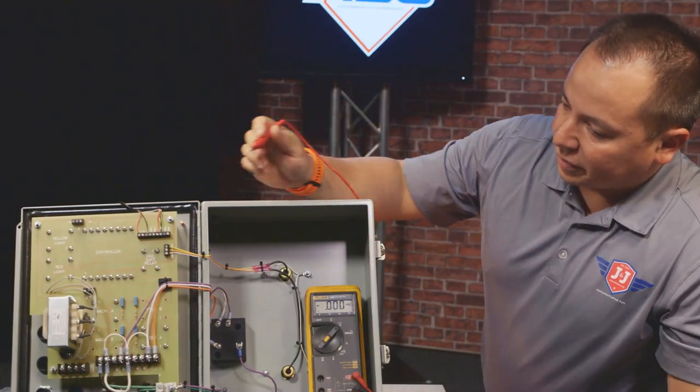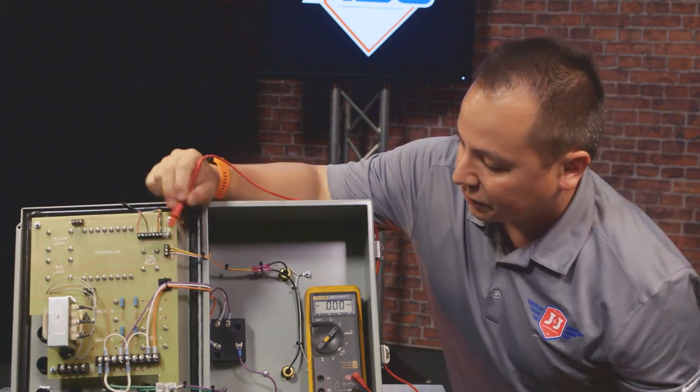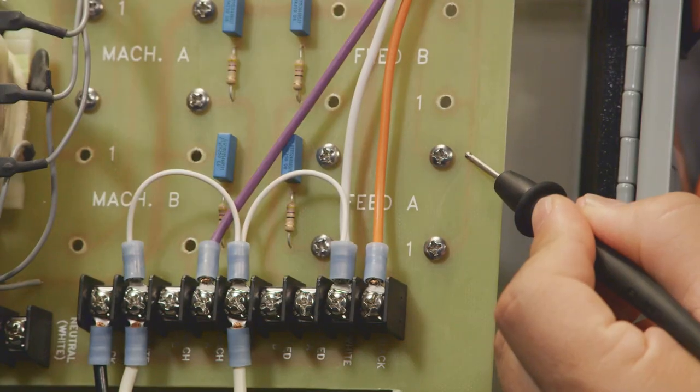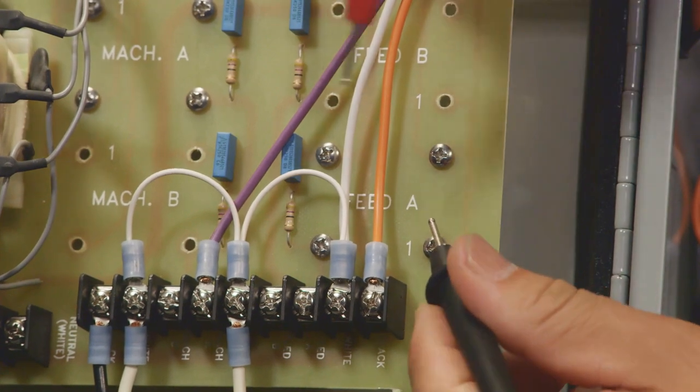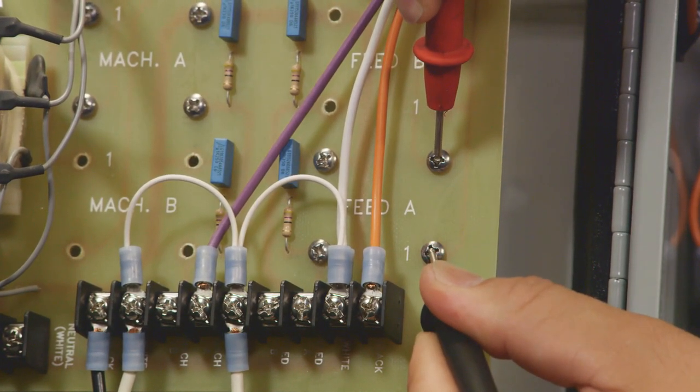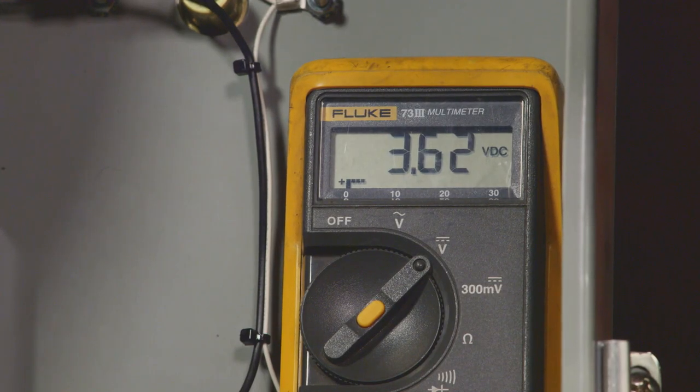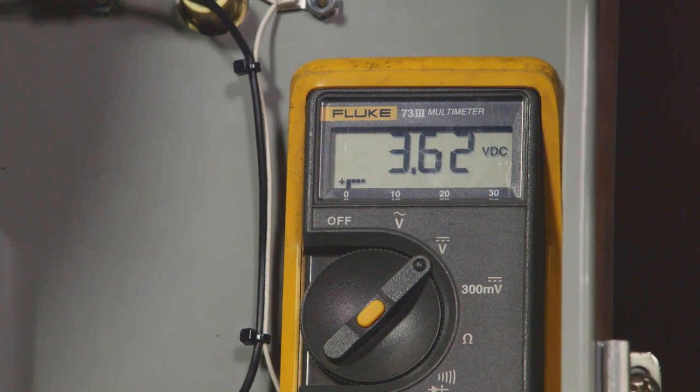After the red light has been turned on, the controller next will turn on the feed relay. The feed relay is located down here. So we're going to touch our test lead to the number 1 position. And then on the feed A relay, the controller is sending the signal to the upper right-hand side. Here we see we have 3.62 volts, which is enough to turn on the relay. Once the feed relay has been switched on, the machine will begin pitching balls. It'll pitch for the programmed number of pitches.